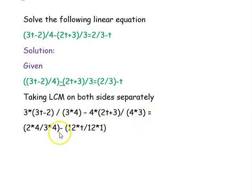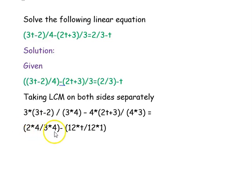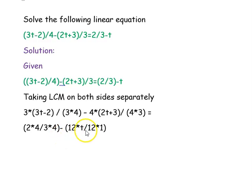Now we move to the right-hand side. The first expression has denominator 3, so to make it 12 we multiply numerator and denominator by 4, giving 4 times 2 over 12. The second expression has denominator 1, so we multiply and divide by 12, giving minus 12t over 12.